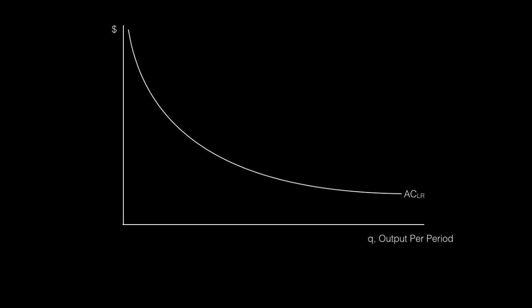The long run average cost curve shows per unit costs for a given firm. The demand curve drawn here is the demand for the entire industry. If Annie is the only firm in the industry, she could produce Q1 and charge a price of P. Since P is greater than average cost at Q1, economic profit is positive.